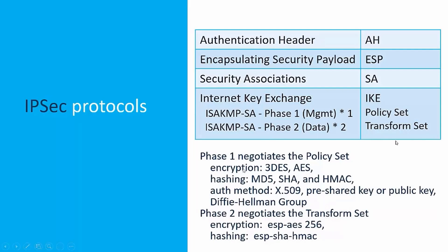Phase 2 negotiates the transform set, which is used to secure the data. In the transform set, we set up the encryption that's going to be used — for example, ESP with AES encryption and a 256-bit key — and the hashing that'll be used for the integrity check, such as ESP with a SHA hash using HMAC. Those are the basic protocols, or the suite of protocols, that you'll see in IPsec.